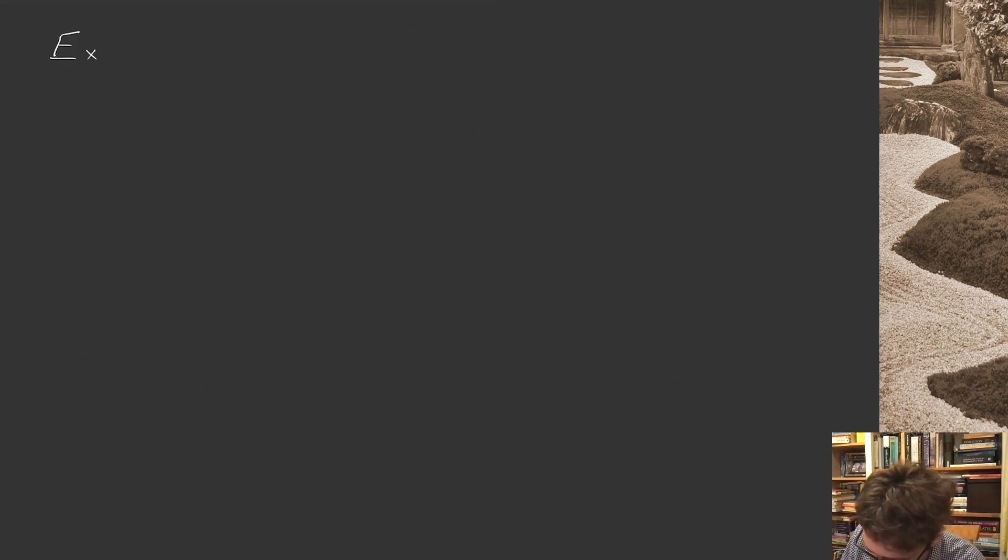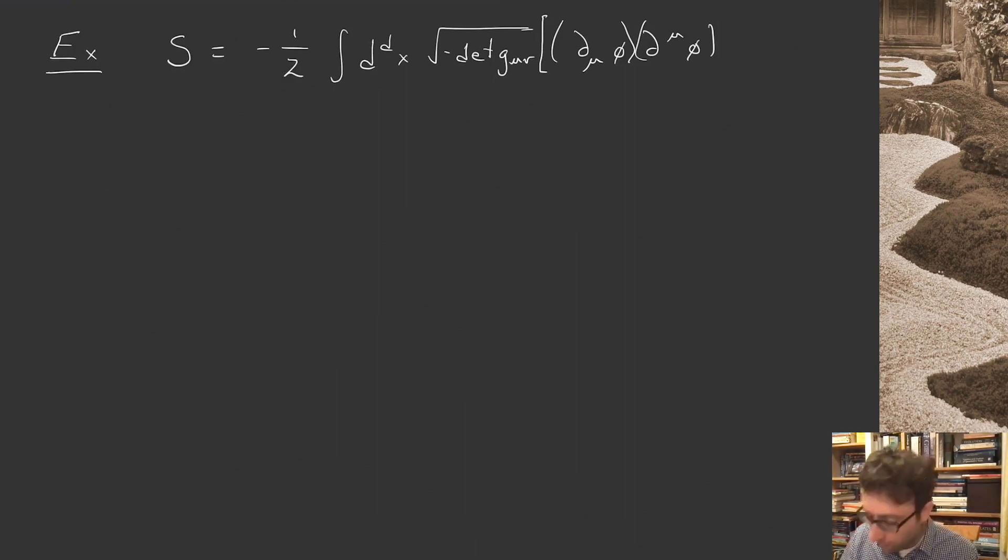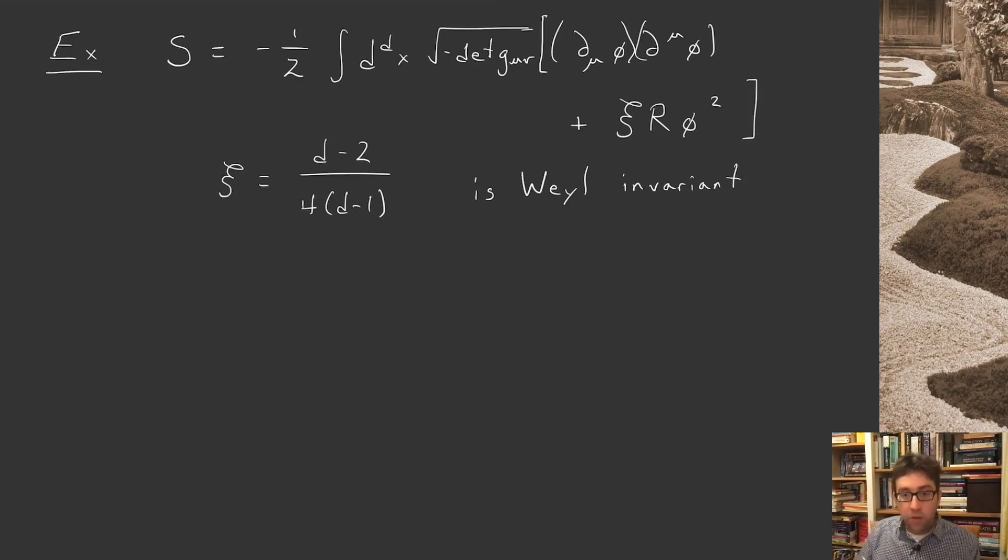Let me give you an important example. It's the free scalar field. We have sqrt(-det g) times the kinetic term, and this isn't quite Weyl invariant. I need to add a term with the Ricci scalar curvature that vanishes in flat space. When you choose c to be a very particular value, c = (d-2)/(4d-1), this example is Weyl invariant. Under shifting the metric, you shift the field φ → Ω^(Δ/2) φ. Under this simultaneous shift, the whole action is invariant.